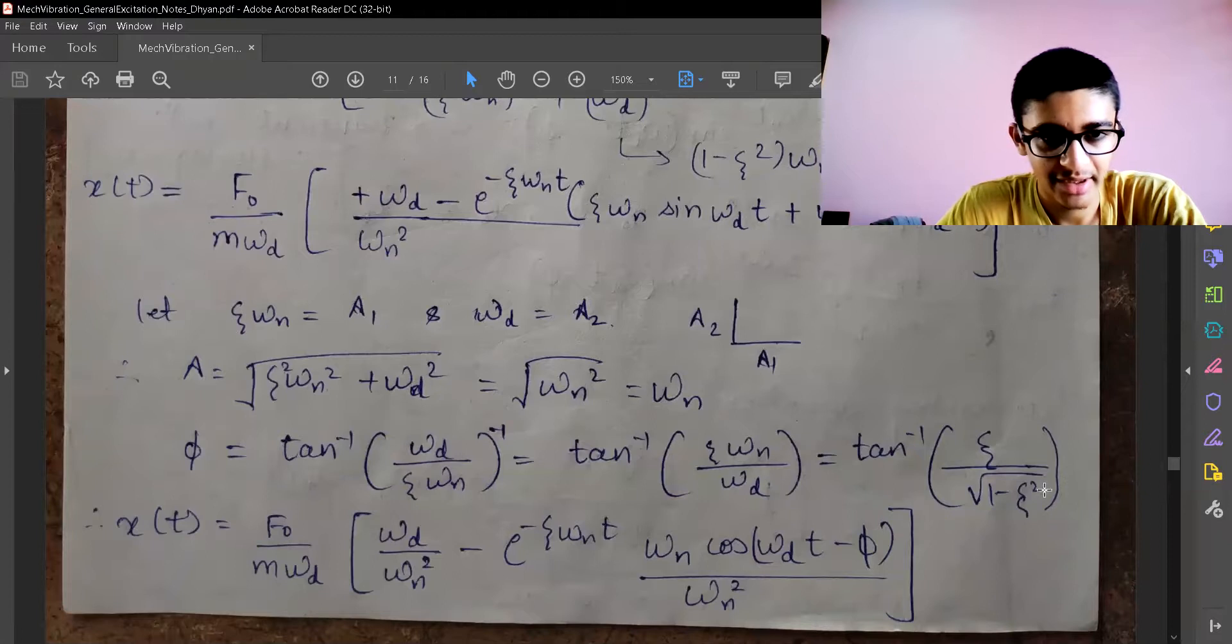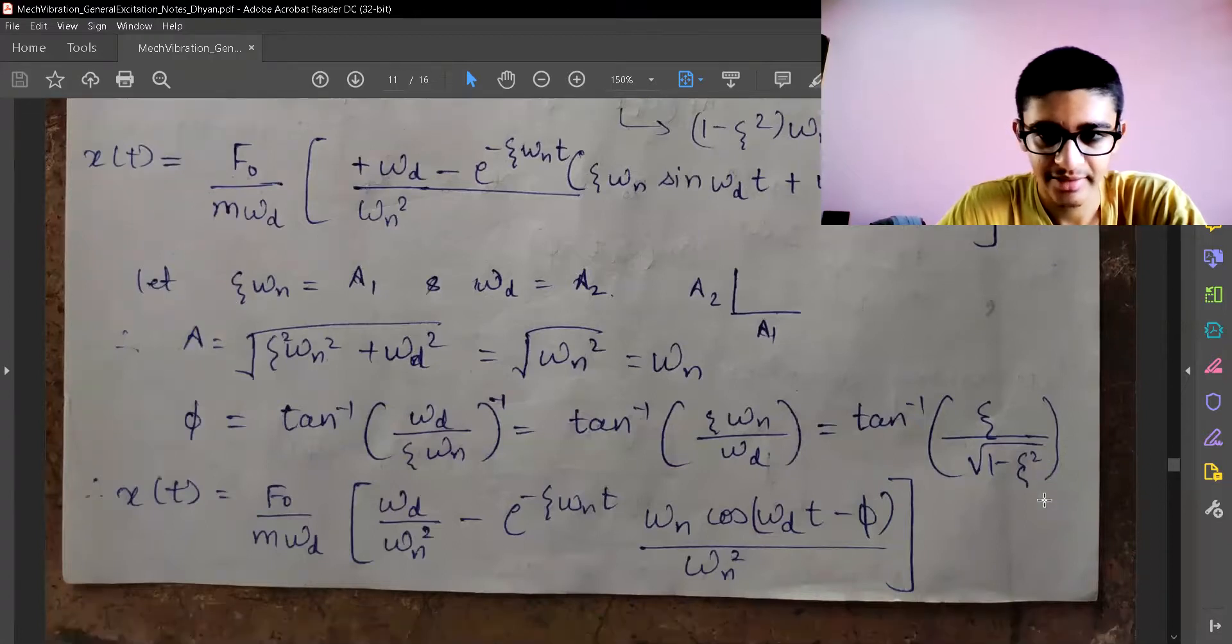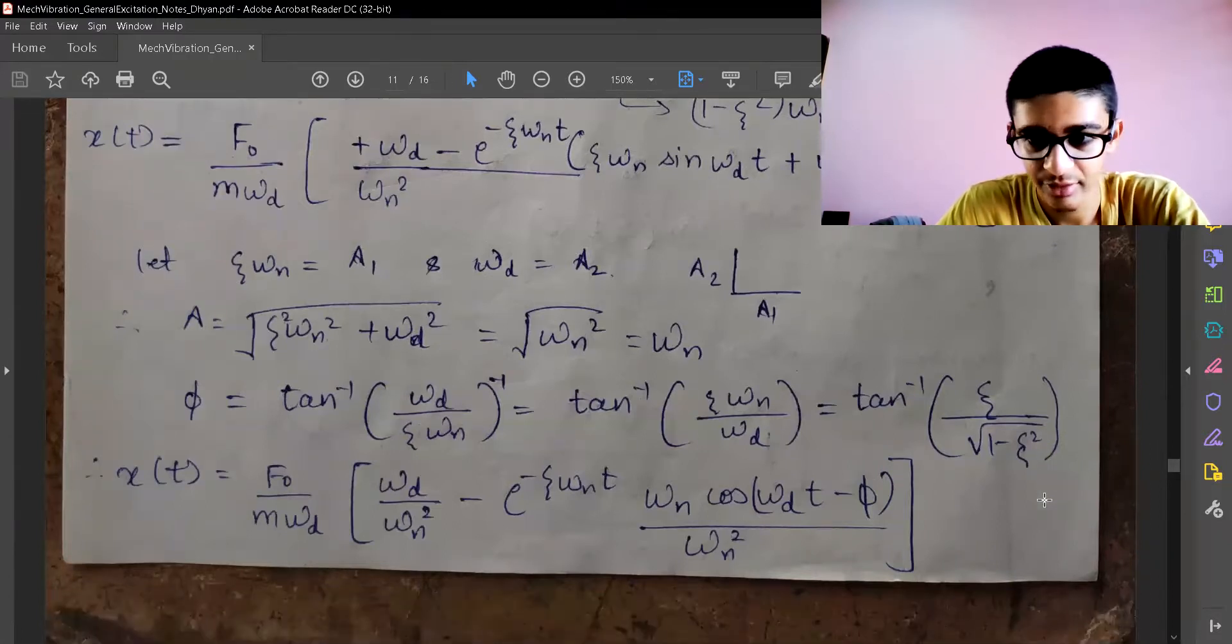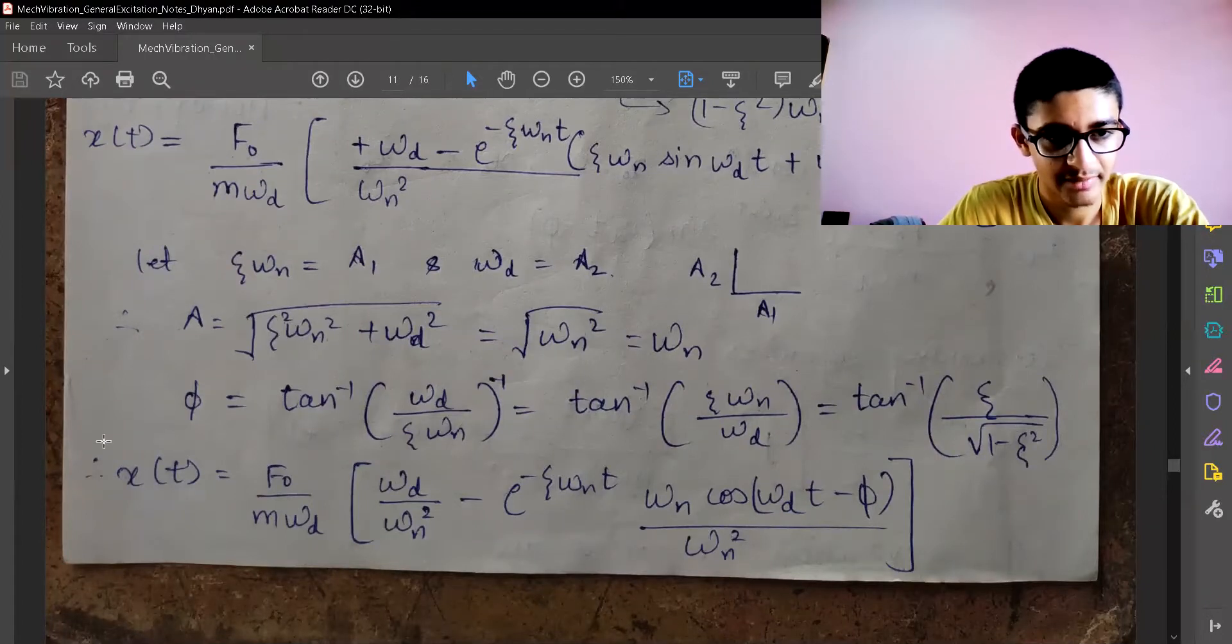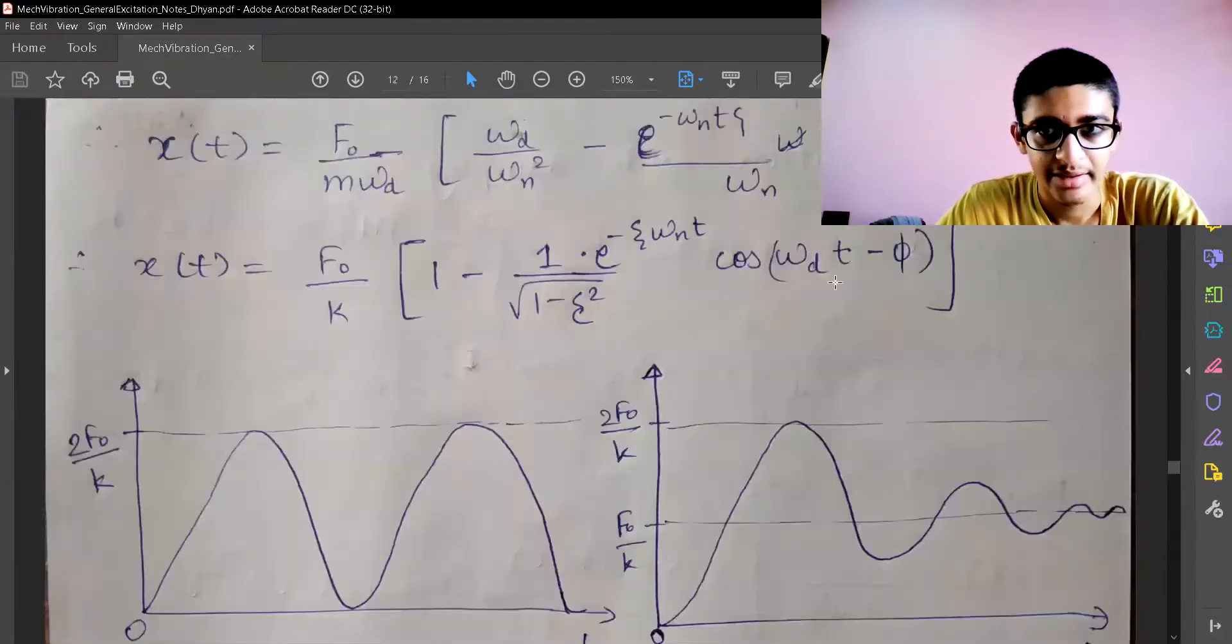We can get phi which is defined in terms of tan inverse of theta upon square root of 1 minus theta squared. We can now directly substitute these things and get the value of the final response. This is how the final response looks like for step excitation with damping.